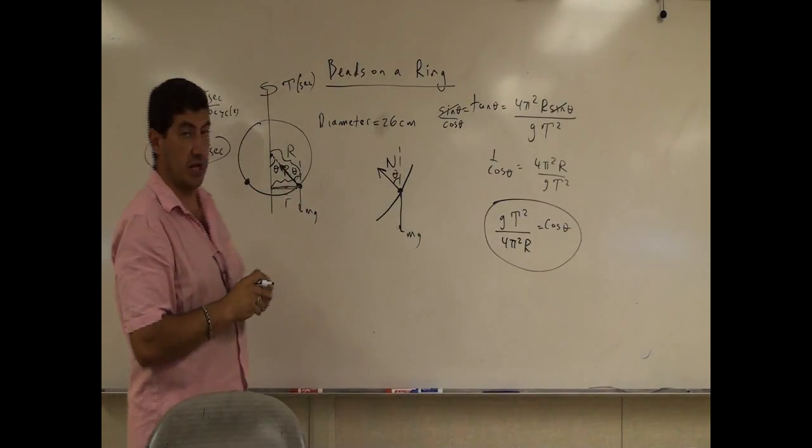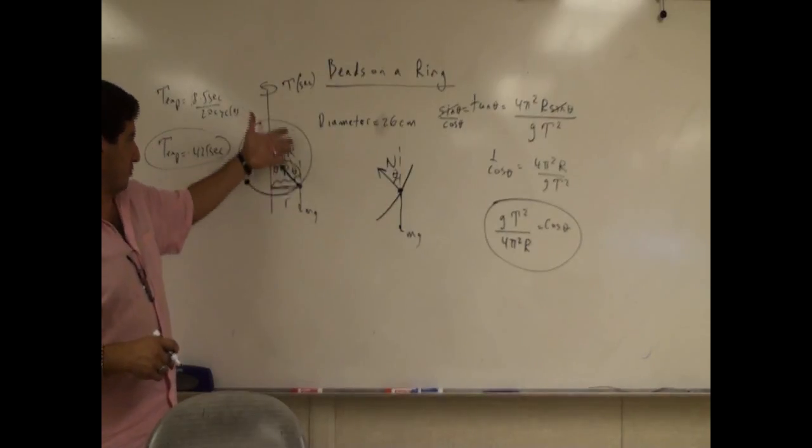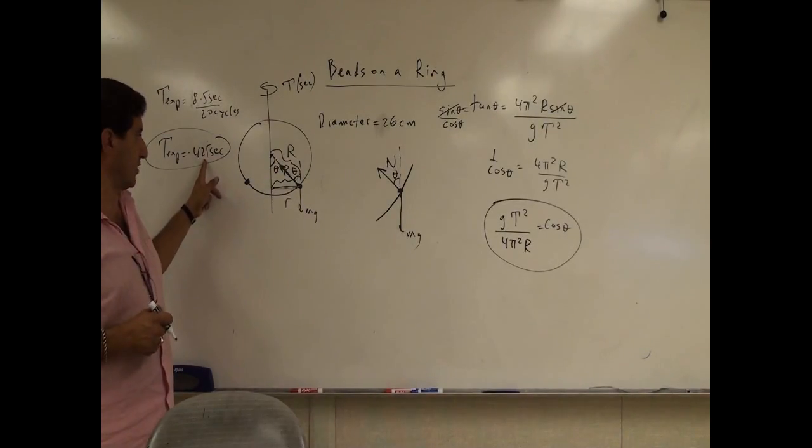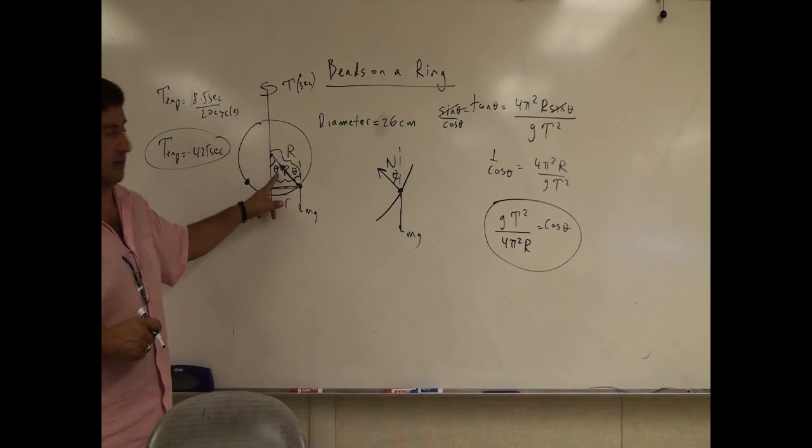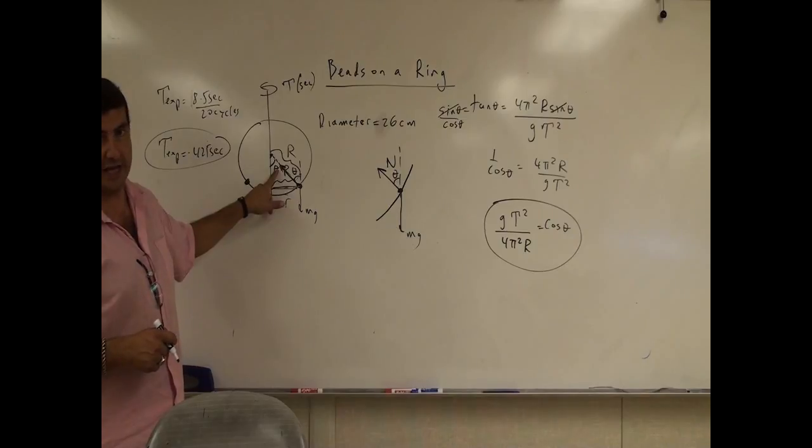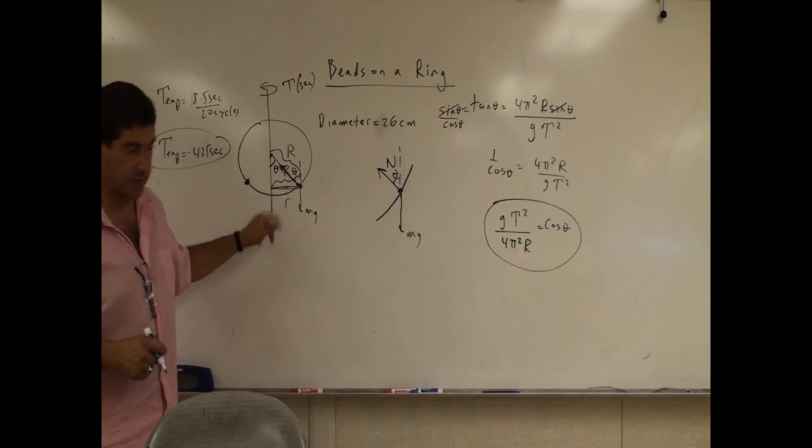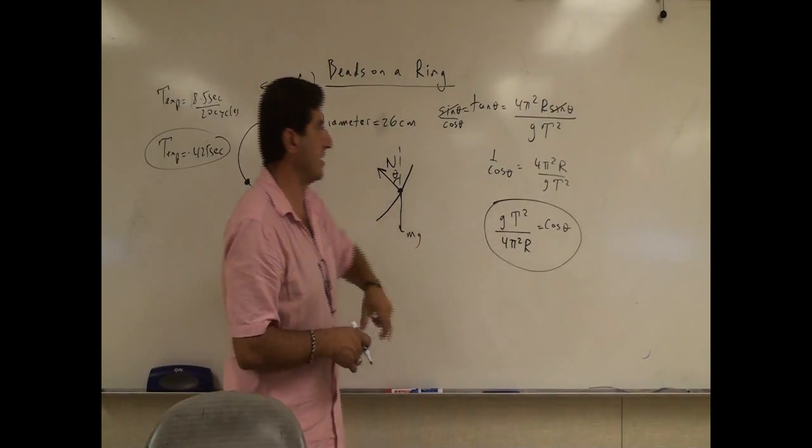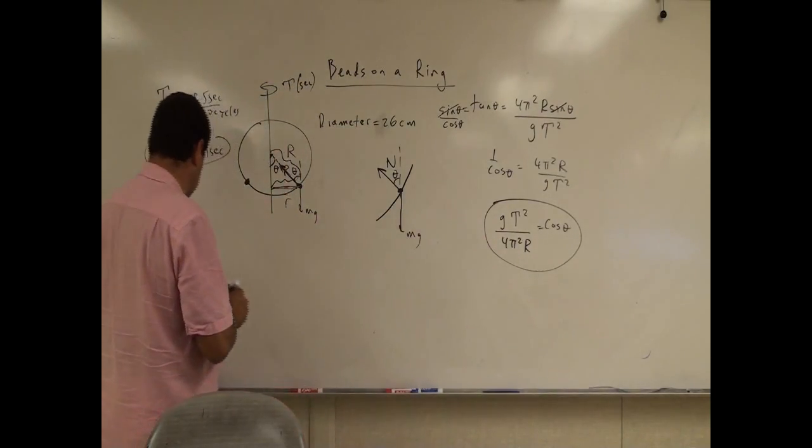So in a good physics problem, what they'll tell you, they'll actually tell you you have a ring, they'll give you the radius of the ring, they'll give you the period of rotation of the ring, and then they say, what is the angle? Or they might ask for the little r. So once you know what the angle is, you can always calculate the little r. In my case, we actually measured the period, and then we're going to put it into here, and then find out what our angle is going to be.